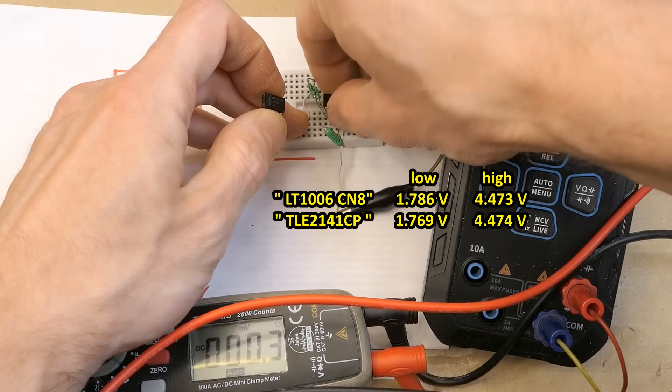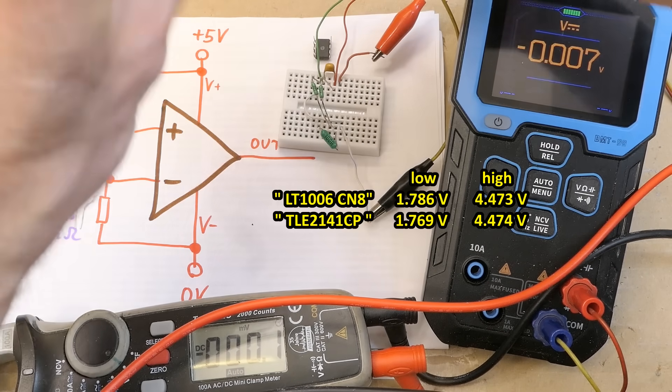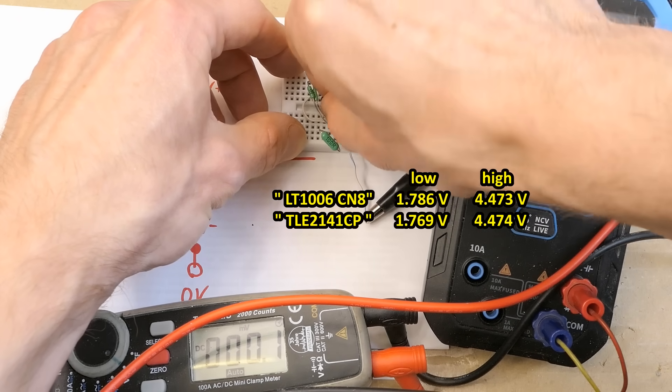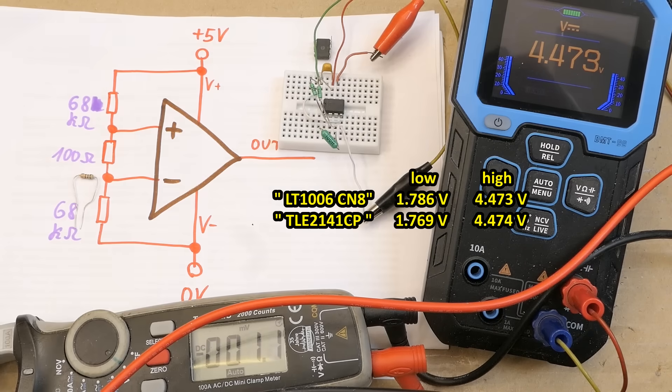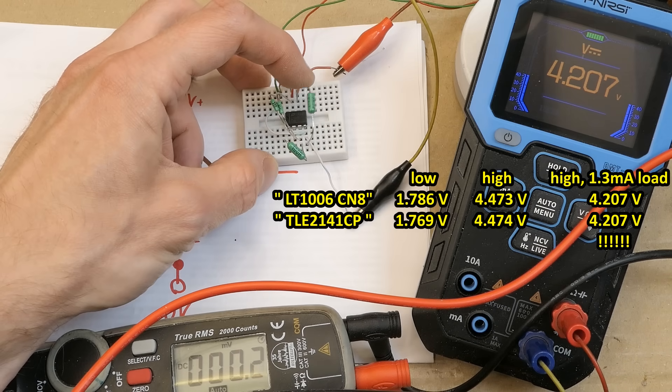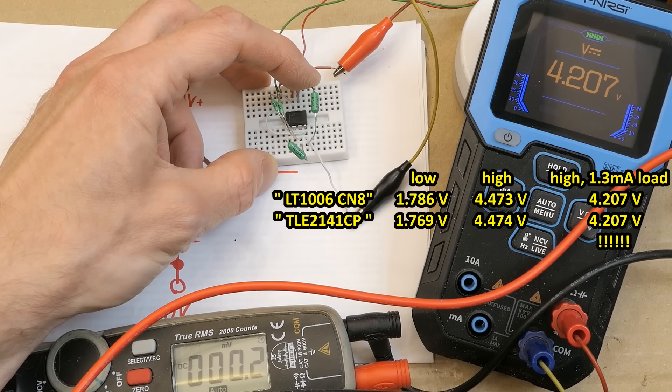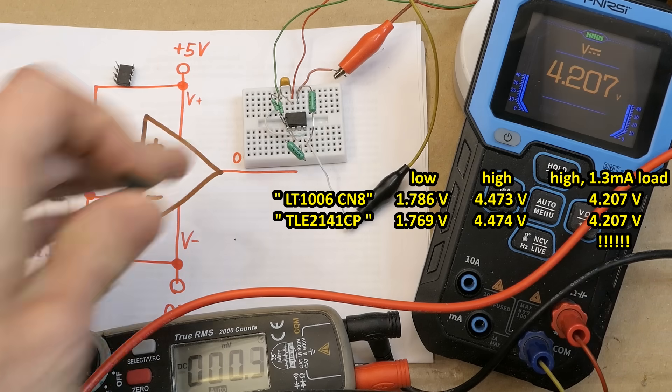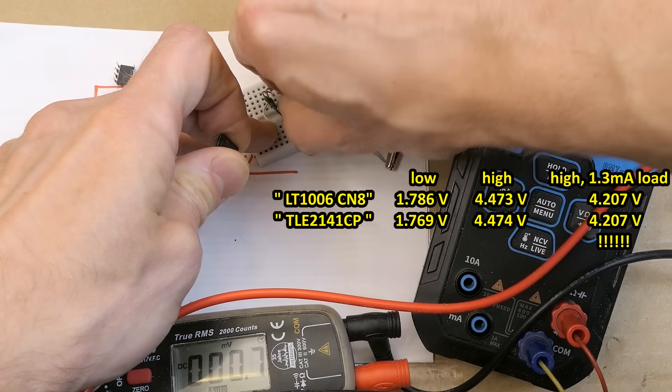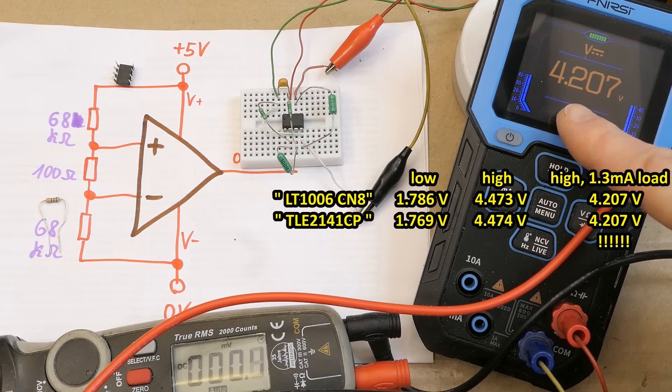This is TLE2141. Now let's put the LT1006 into it. They behave exactly the same. Now loading the output using a 3.3 kilo ohm resistor in the high state, pulling it down a little bit. This is LT1006 and the other one again 4.20.